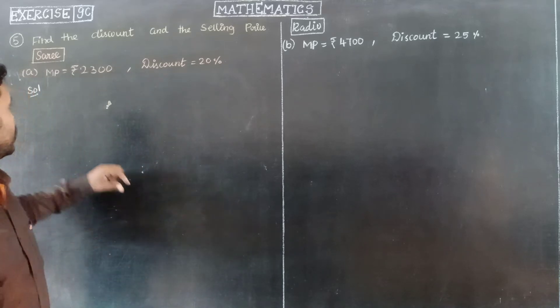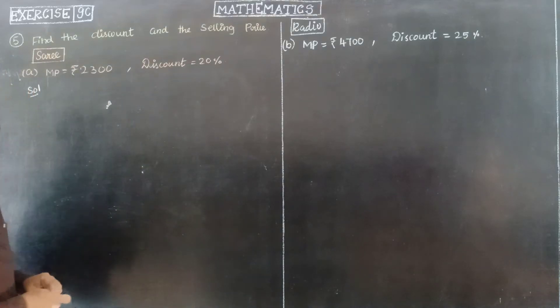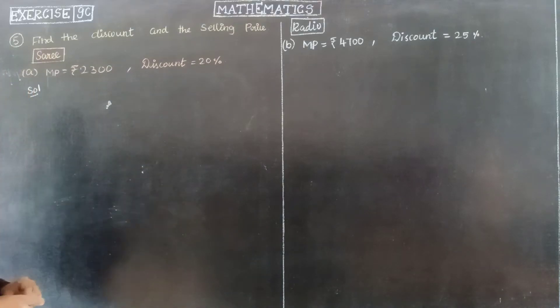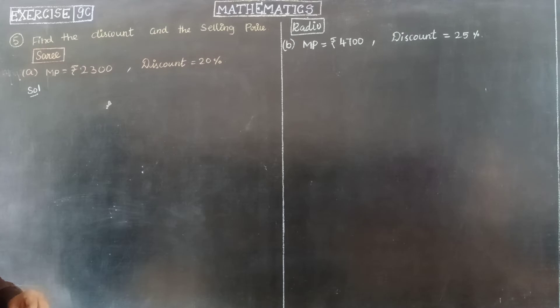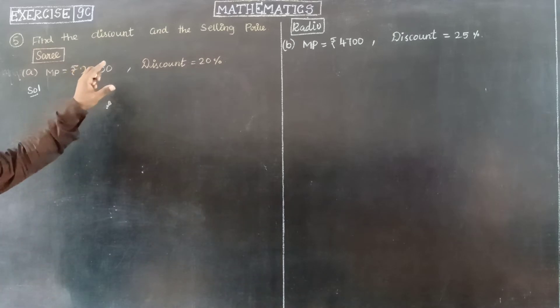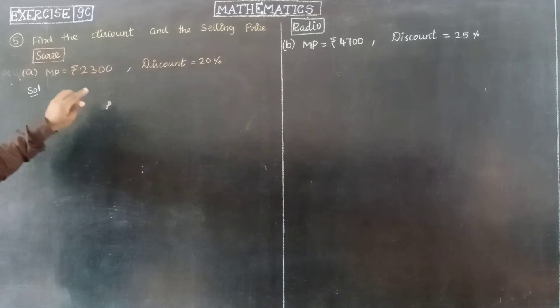Today, exercise 9 is question number 5. Find the discount and the selling price. So, discount and the selling price — I am going to work through this.